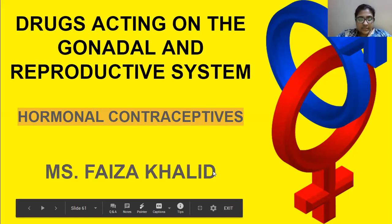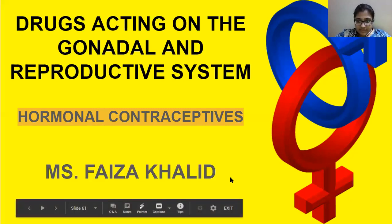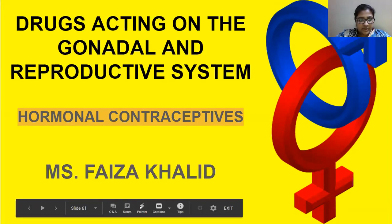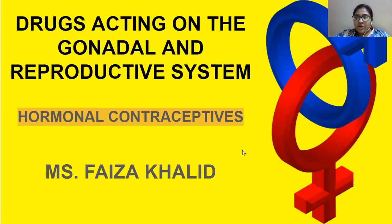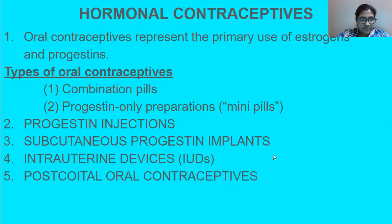This is the second-to-last lecture where we are discussing drugs acting on the gonadal and reproductive system. Today we will be discussing hormonal contraceptives. As the name indicates, a contraceptive is a drug which prevents pregnancy in a woman. Hormonal contraceptives are drugs which are hormonal and would prevent pregnancy.